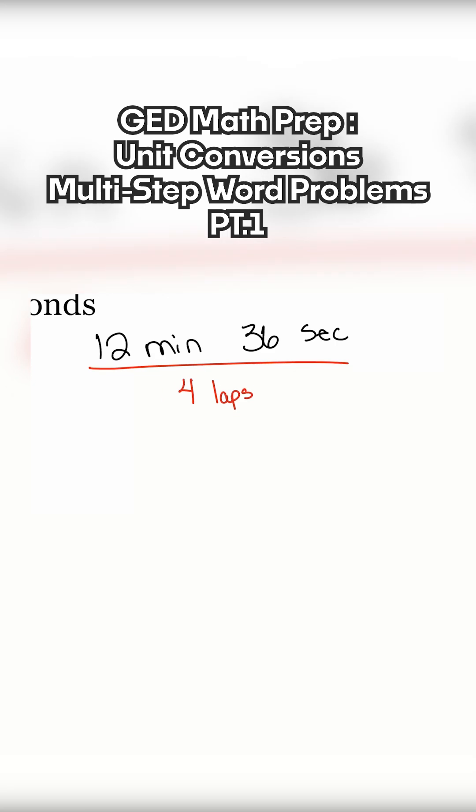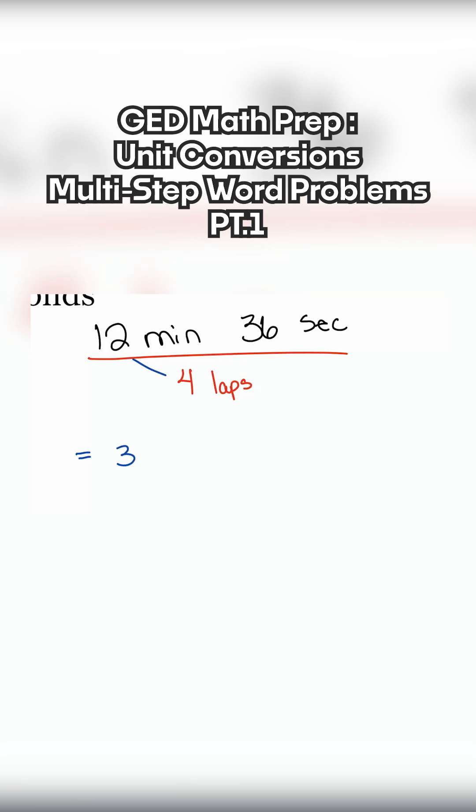In this particular problem, if you would have noticed that they're clearly both divisible by four, then your answer is going to be 12 divided by four, that's three minutes. And 36 divided by four is nine seconds. There's our final answer.